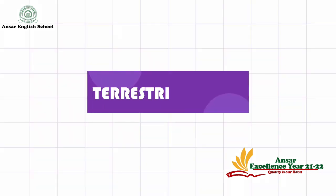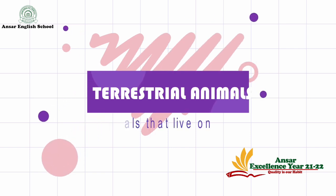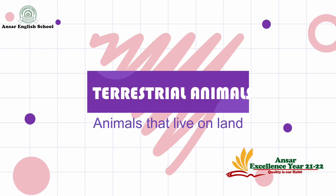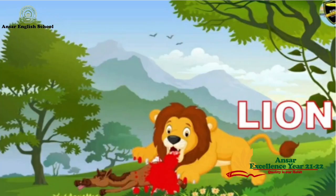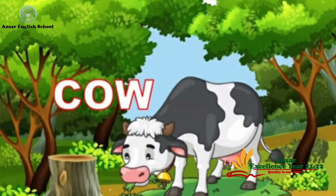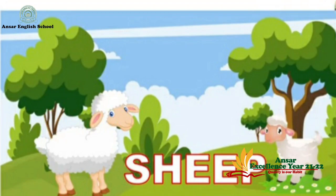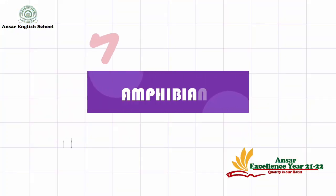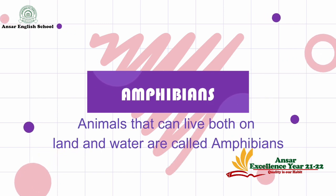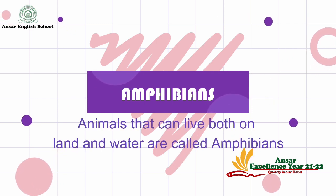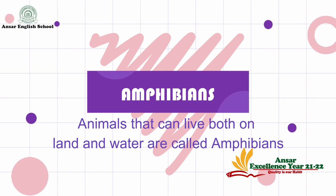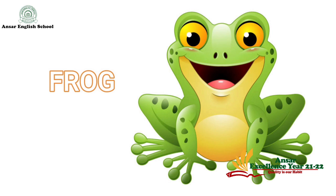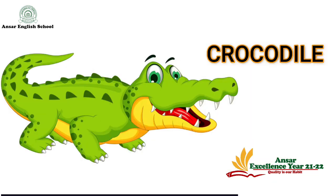Terrestrial animals are animals that live on land. Examples for terrestrial animals: lion, cow, sheep. Amphibians are animals that can live both on land and in water. For example: frog, crocodile, crab.